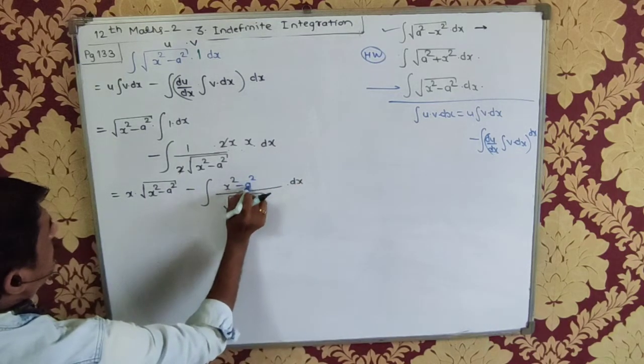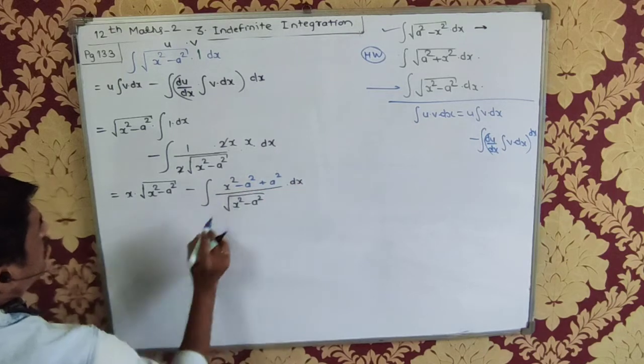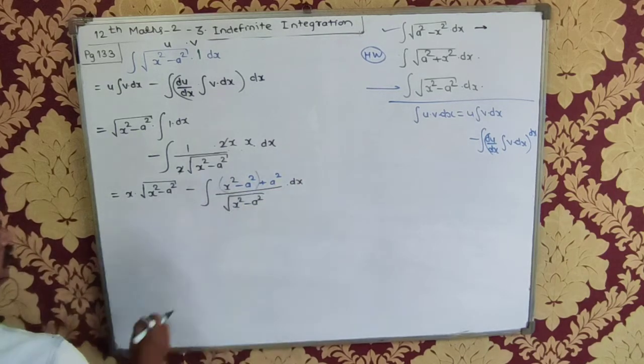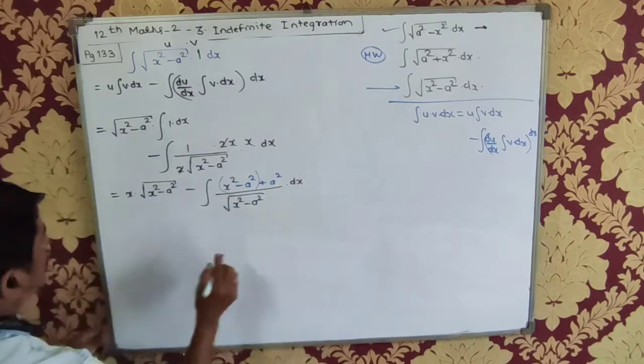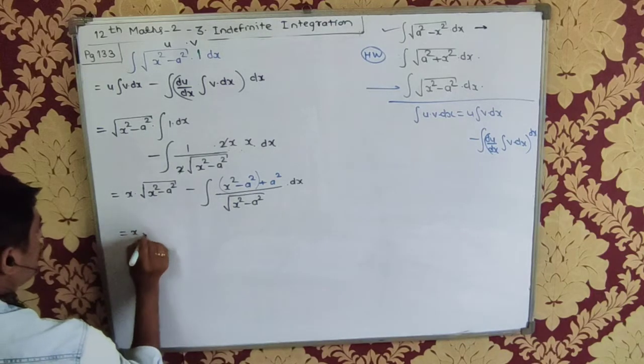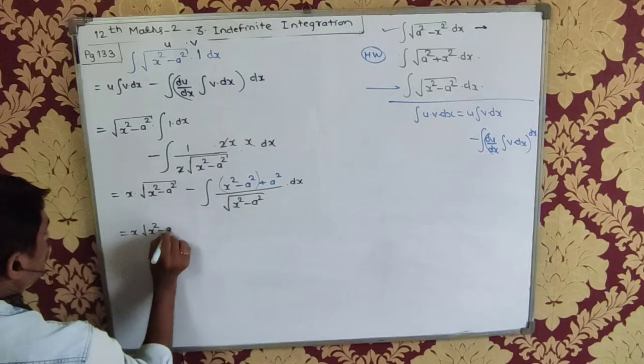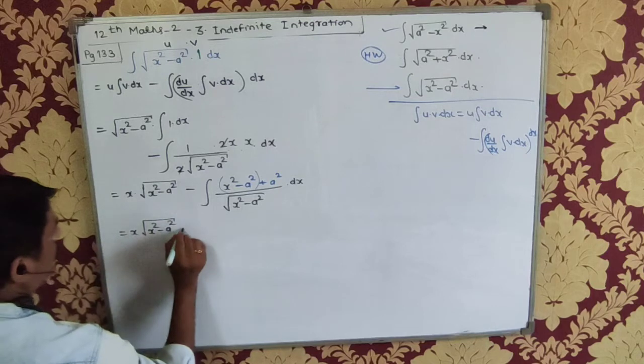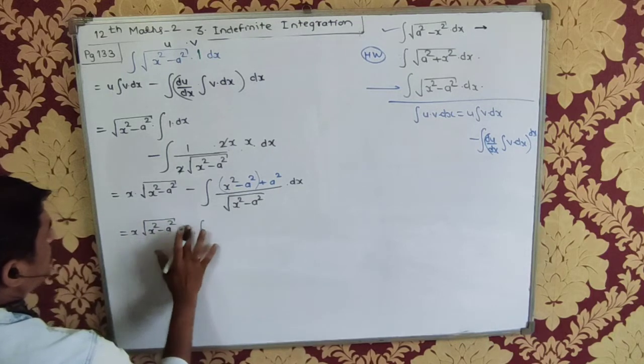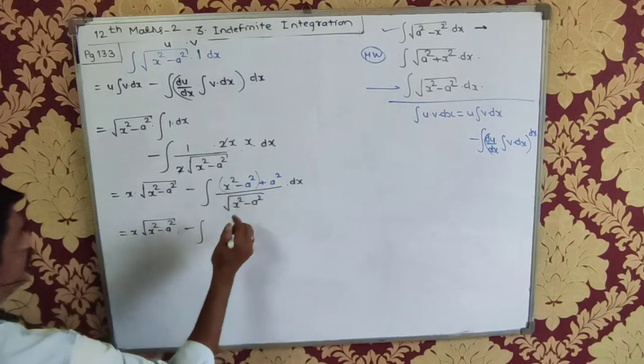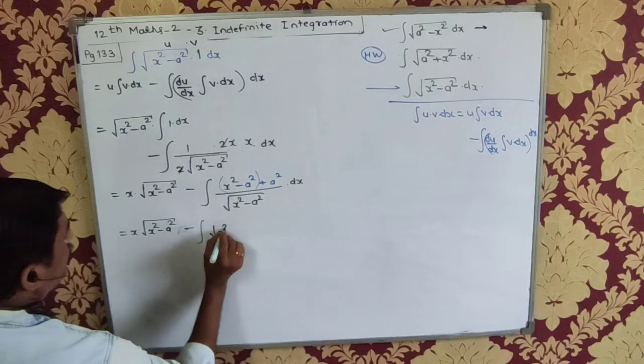x² - a², minus a² plus a². First of all, I add a². Then I separate this. So this will be x√(x² - a²) plus... sorry, minus √(x² - a²) dx.